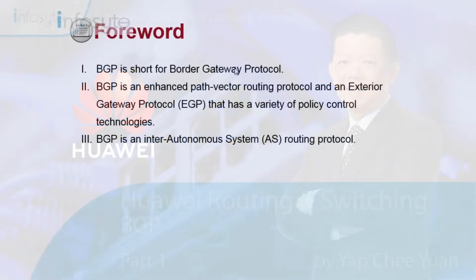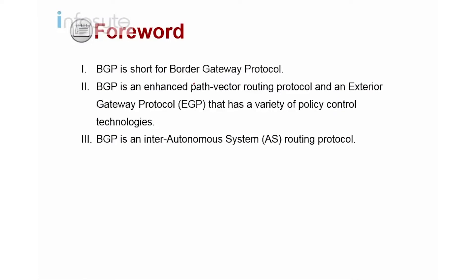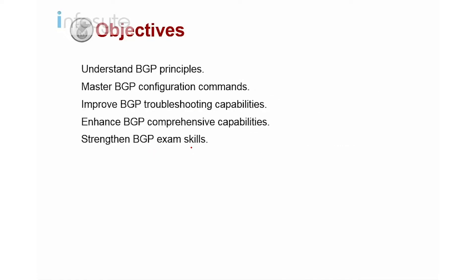So what is BGP? BGP stands for Border Gateway Protocol. This is an external gateway protocol used on different autonomous systems — in this case we call it an inter-autonomous system routing protocol. The objectives for our slide here: we are going to look into the BGP principle, the Huawei configuration commands on BGP, the troubleshooting skills on BGP, some of the enhanced features on BGP, and some of the HCI ESM scale.